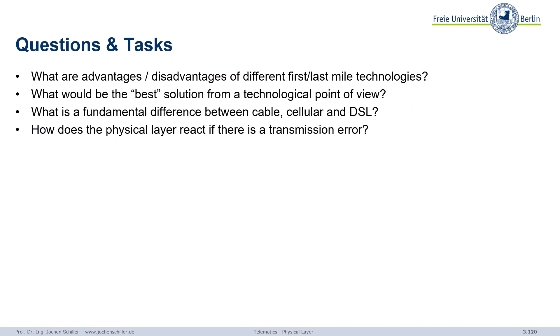Finally, some review questions: What are the advantages and disadvantages of different first and last mile technologies? Vendors will always claim their solution is better, but looking at the fundamental architecture reveals real differences. What is the best solution from a technological point of view for the last mile? What are the differences between cable, cellular, and DSL — including using cellular for the last or first mile? And looking at the physical layer overall: how does the physical layer react if there is a transmission error, interference, or a bit flip?